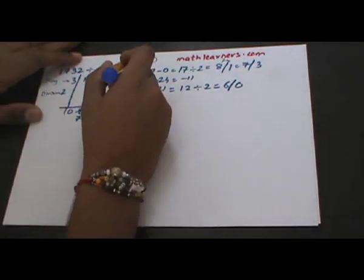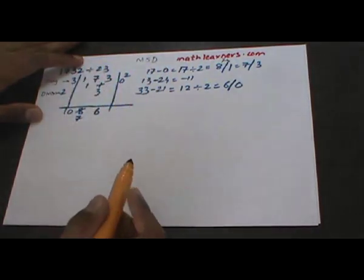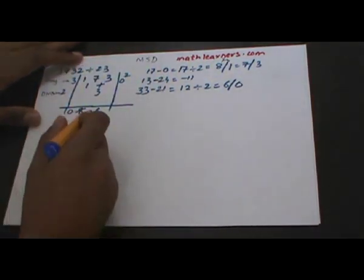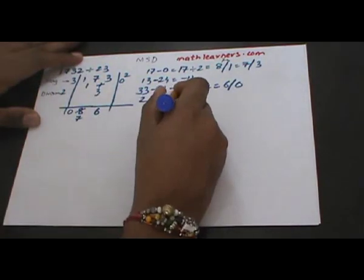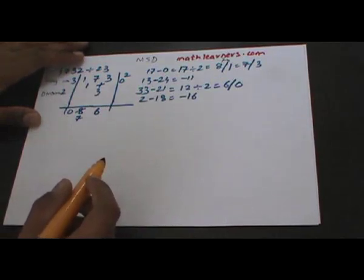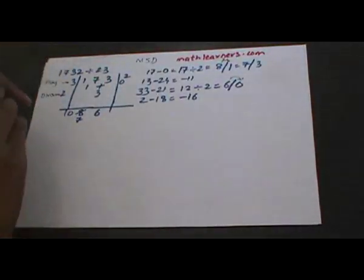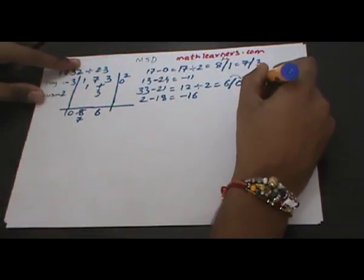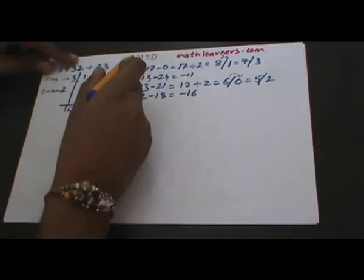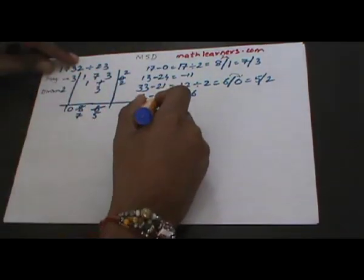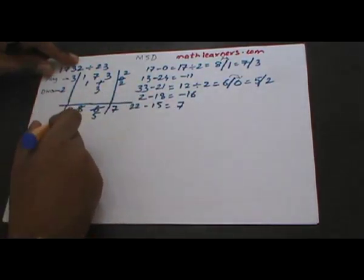When we enter the remainder column we carry out the same process but we do not do division — we just carry out multiplication and subtraction. 6 multiplied by 3 gives 18, subtracted from the combination of 0 and 2, that is 2, giving negative 16. We do not want a negative number, so we increase the remainder by reducing the quotient by 1. The quotient becomes 5 and the new remainder becomes 2. We do MS again: 5 multiplied by 3 gives 15, subtracted from 22, giving 7.